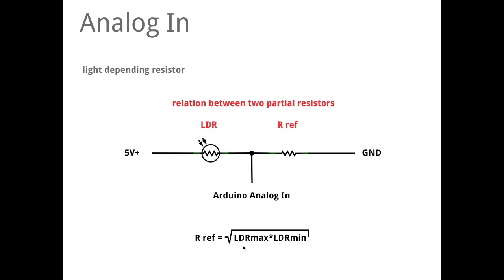If you would like to calculate it, then take a voltmeter and measure the resistance of your LDR in two different surroundings - one if there is the most light, and the second if there is darkness - and then multiply them, and the root of this product is the reference resistor.